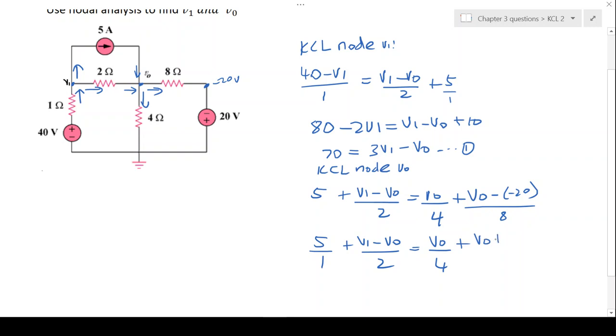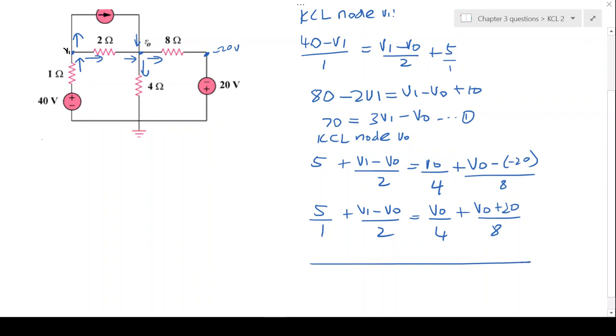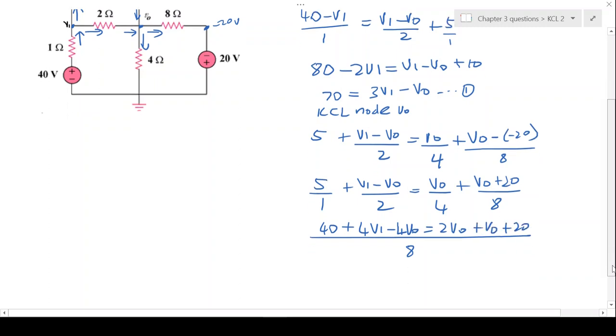We can select a common factor here of 8, so 8 times 5 that will be 40, plus from two to get to eight it will be multiplied by four. So 4v1 minus 4v0 gives you 4 to 8 is 2, so it'll be 2v0 plus v0 plus 20.